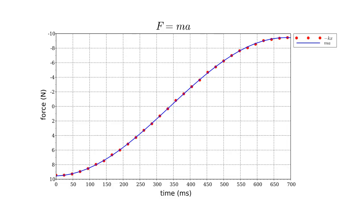Better still, here we plot minus the spring constant k times our position data as red dots. We also plot mass times our acceleration curve. The agreement is excellent. F equals ma is true at all times for the mass-spring system, to a high level of accuracy.